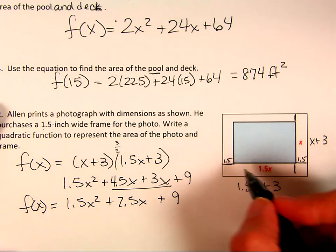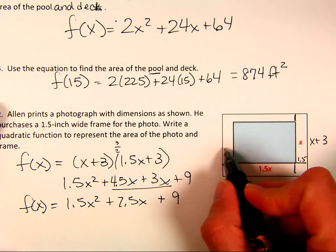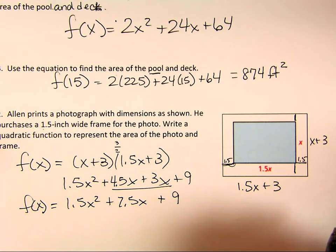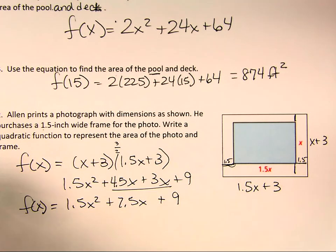So the tricky part about these is whatever that little width is, you have to add it to both sides. But if you figure that out, these aren't that difficult. So good luck with that. M squared, sign off.